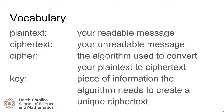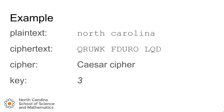The algorithm will use the key to create that unique cipher text. So if you used a particular algorithm with two different keys and the same plain text, you should get two different cipher texts. For example, a plain text message of 'north carolina' would turn into the cipher text 'QRU WK' and so on, if we use the Caesar cipher with a key of three.